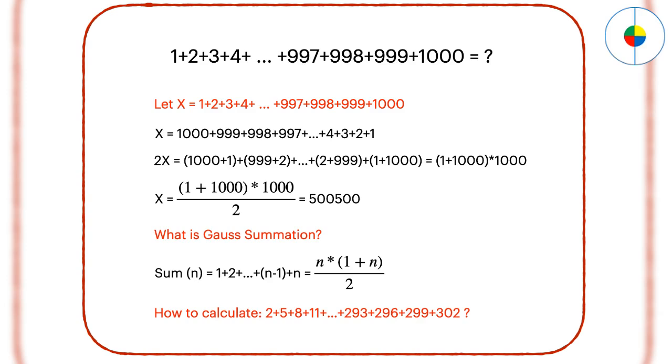How about 1 plus 2 plus 3 plus 4 until plus 997 plus 998 plus 999 plus 1000? This looks like not quite the math you learn from schools. What do you think about it? You can assume the result is x. Then you can do some conversions and figure out a better way than the traditional way. In fact, this method was invented by Gauss, a famous mathematician, at a very young age. This is also called the Gauss summation.